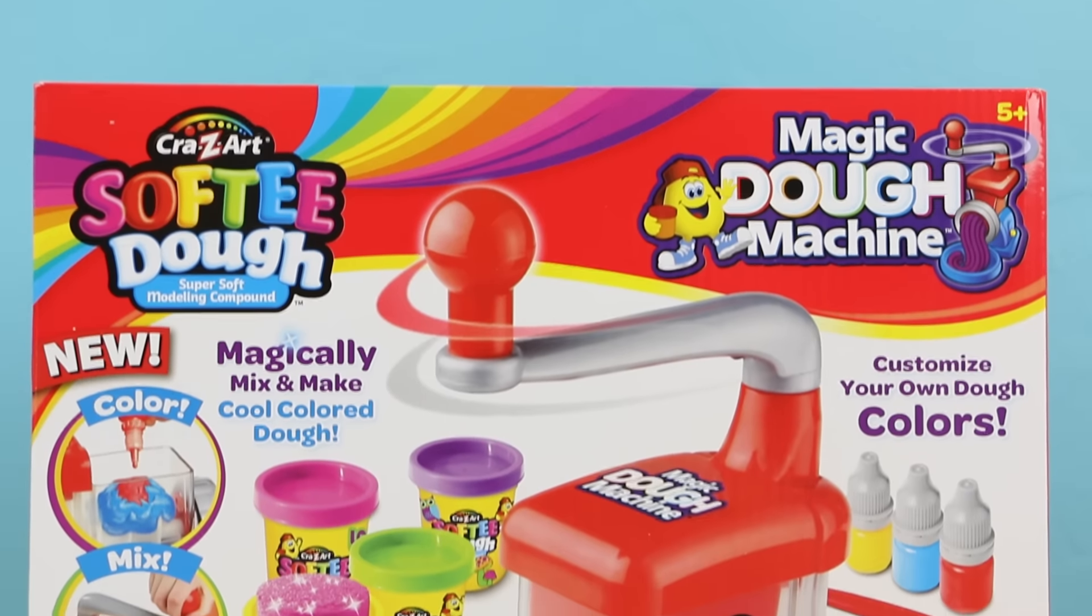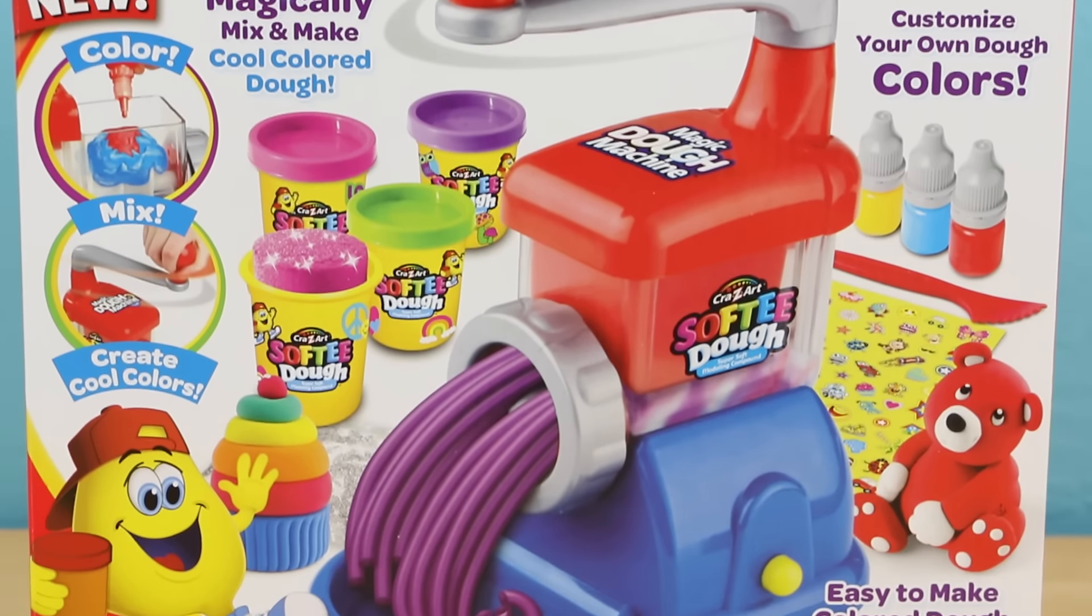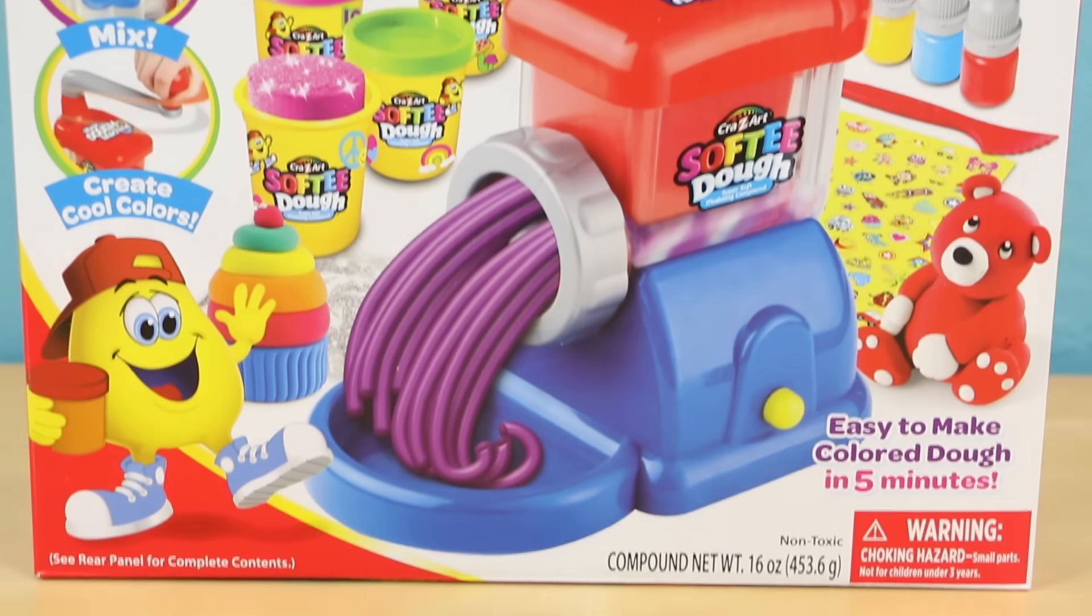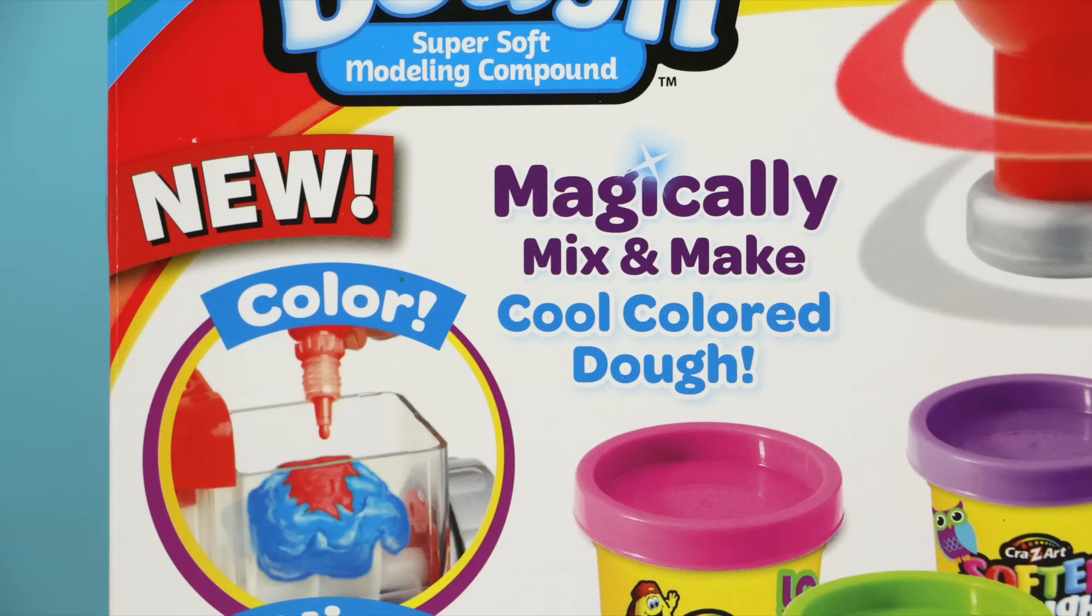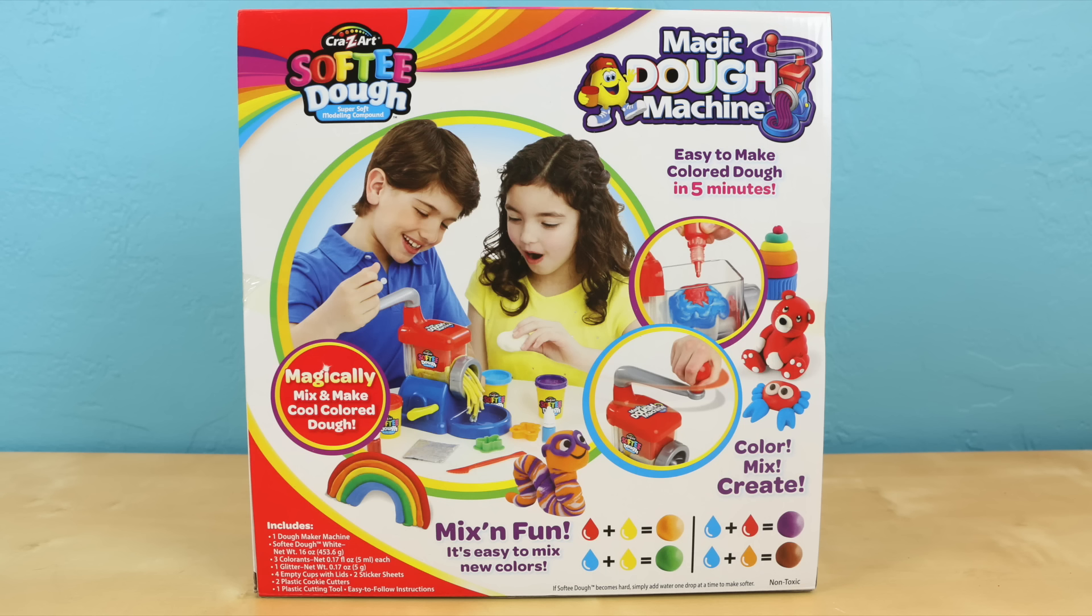Thank you very much to Crazy Art who sent me this toy, although I did have it on my list of toys to review already. With this set you can magically mix and make cool colored dough. On the box it says you can make the color dough in five minutes. The magic dough machine is for ages five and up and the retail price is $24.95.